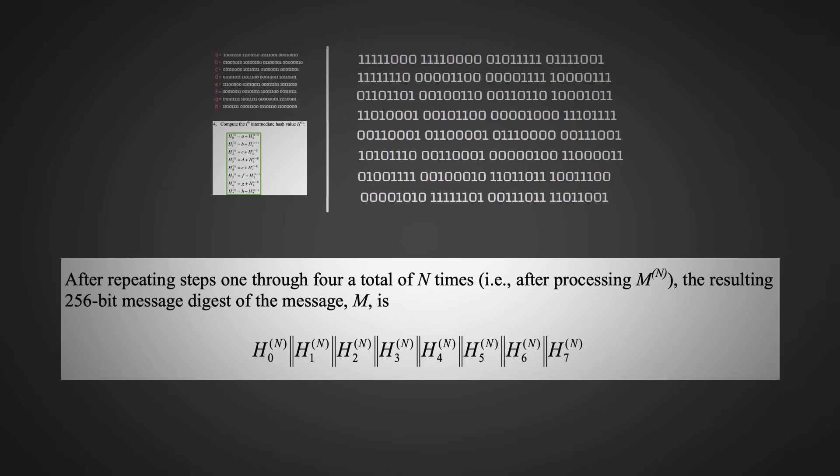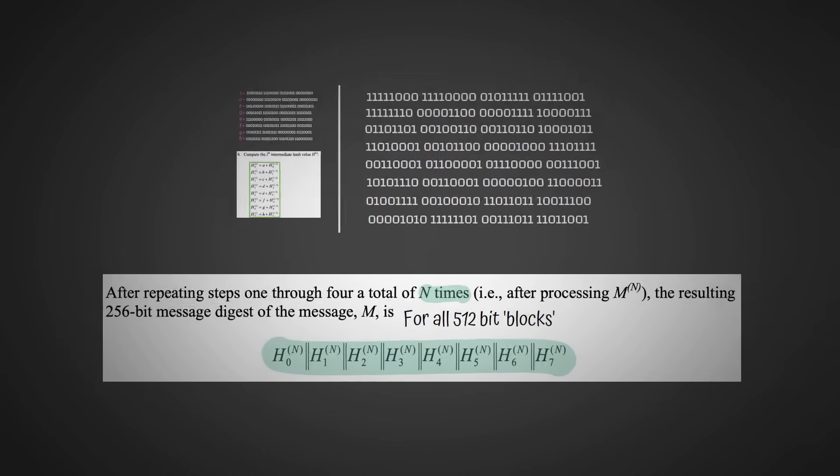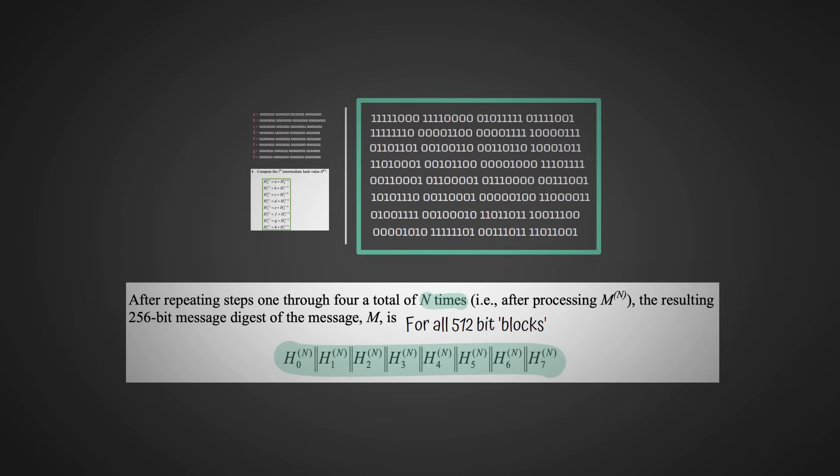Now we're finished, because as I said earlier, our padded input was only of length 512, and so we only had to go through the outer loop once. Our final output is given as this thing. Now all these double lines just means shove all of these 32-bits together, merge them into one 256-bit number.